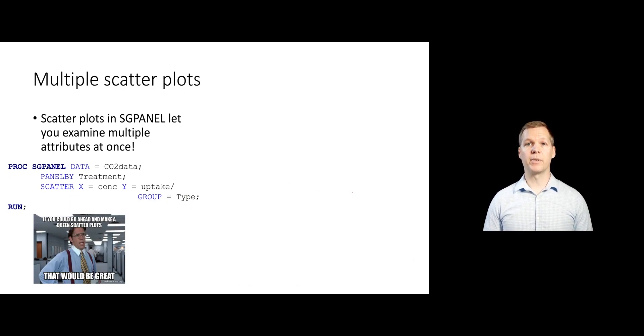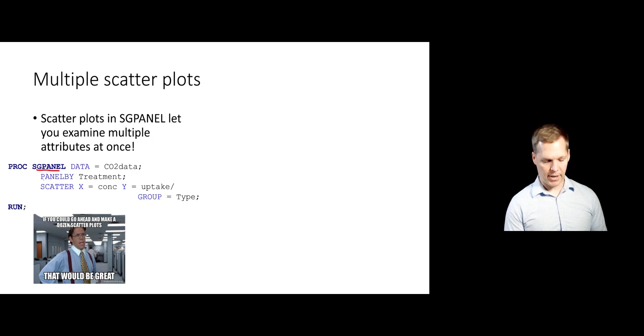And of course, just like we did with the histogram and the density statement and the box plot and the scatter statement, we can overlay these things on top of each other and have more than one. And we can also panel by. So we can take it to the SGPanel procedure and then create that same plot across levels of a categorical variable. So here we're just switching to SGPanel and adding the panel by treatment.